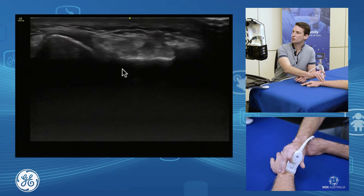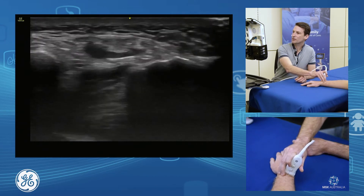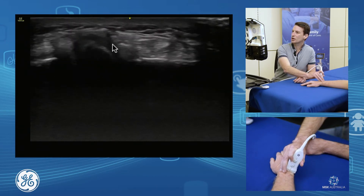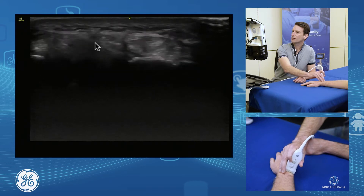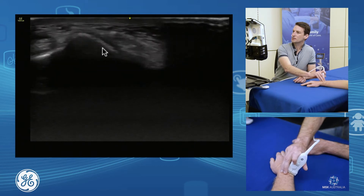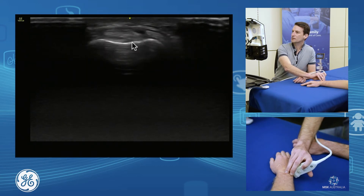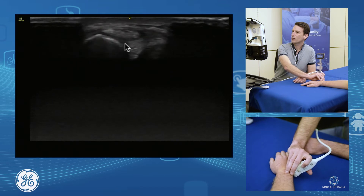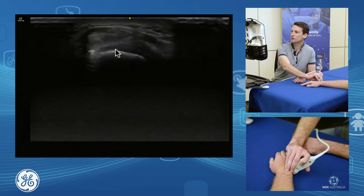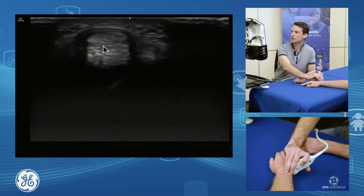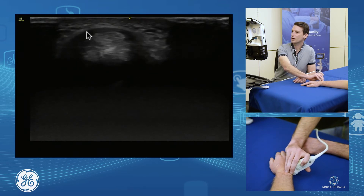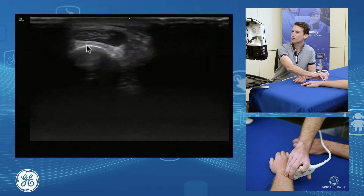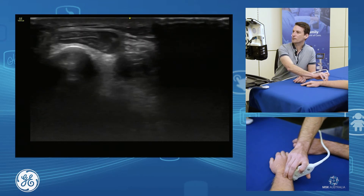As we move over to extensor compartment five, we have our extensor digiti minimi running through there. And as you continue on over, we see our extensor carpi ulnaris running through, sitting in its sub-sheath, over in the groove and up through the muscle.